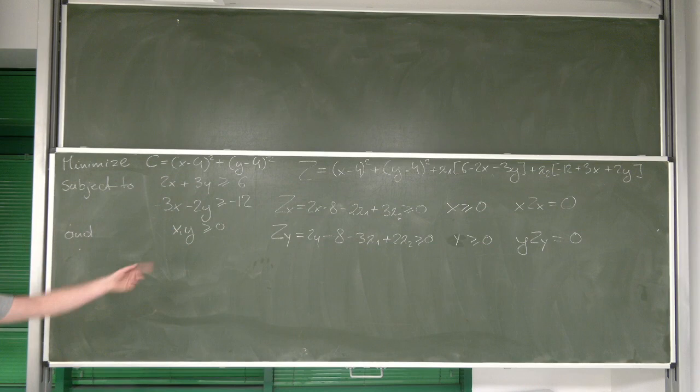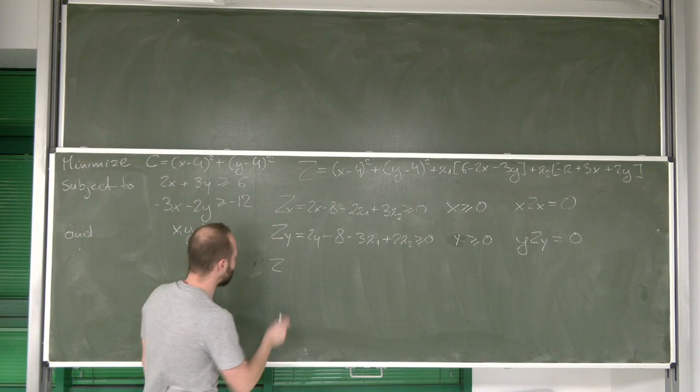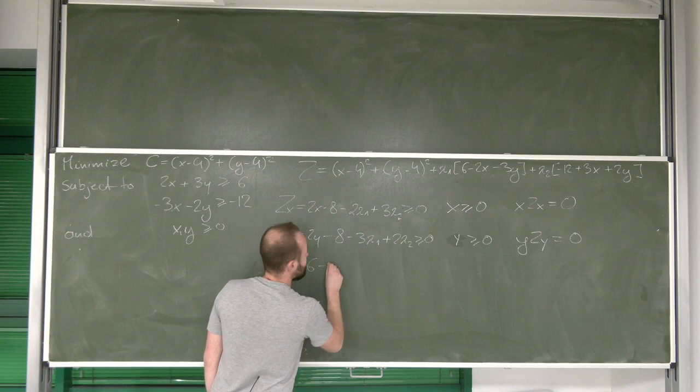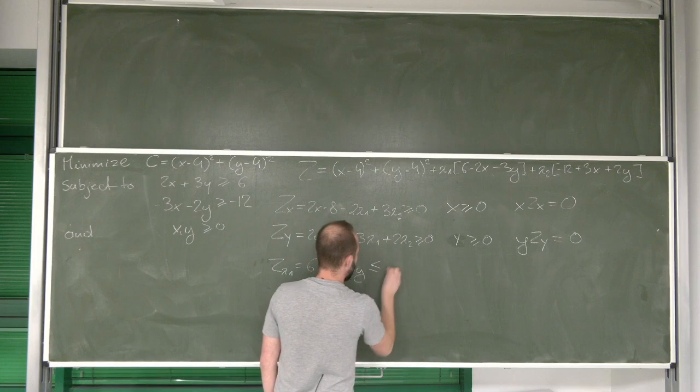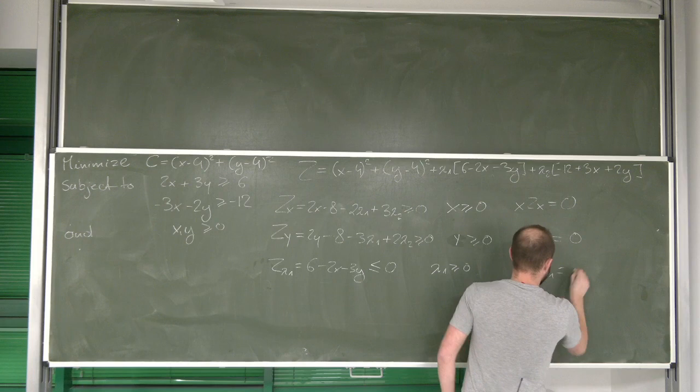Then of course we need to differentiate the function with respect to lambda 1 and lambda 2, which is very easy in this case, as usual, because of course we get the restatement of constraints. And this of course needs to be lower or equal to 0. Lambda 1 needs to be non-negative. And one of them needs to be equal to 0.